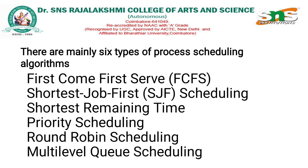The first one is First Come First Serve, that is FCFS. The first process will occupy the processor on the basis of first come first serve. The second is Shortest Job First, that is SJF. In this scheduling algorithm, the process with the lowest execution time will be taken into the processor first.